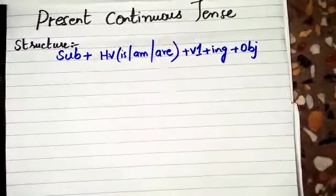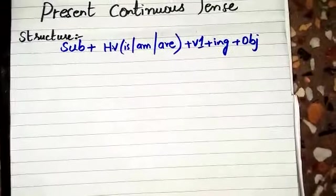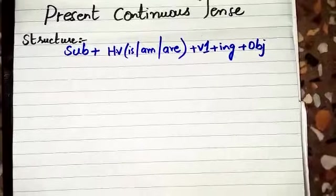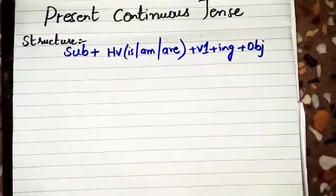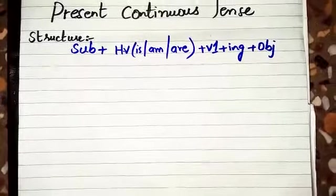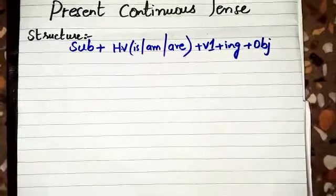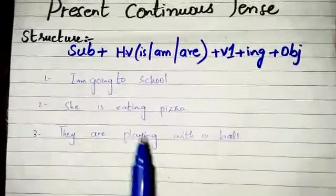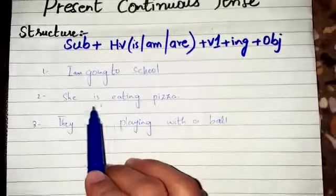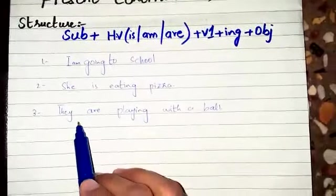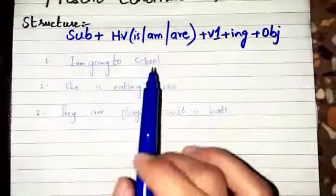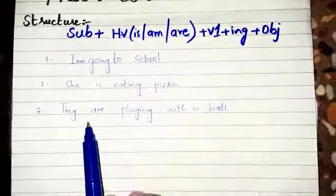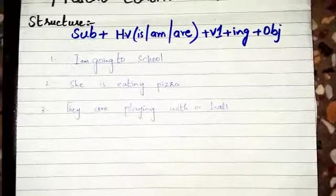In present continuous tense, you can use I, she, it — with I you use am, with she and it you use is, and with they and you you use are. After that, write the verb in first form, then write the object.